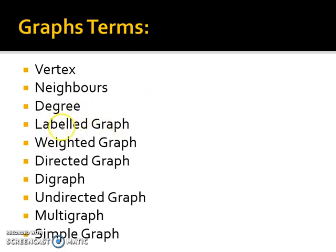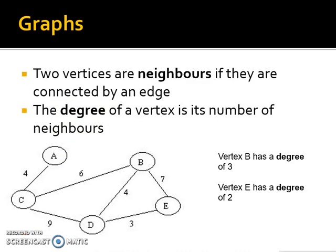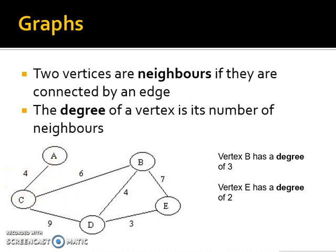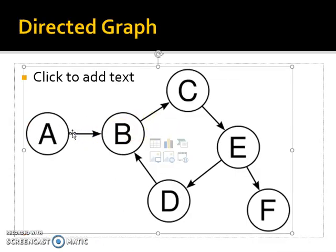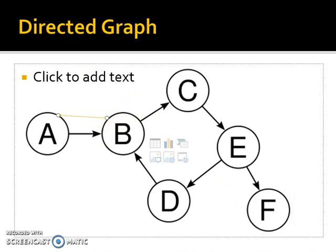The neighbors, the degree, the labeled and weighted which are the same thing. Directed and digraph, which are the same thing. Undirected graph, that's an example of it. Undirected is undirected and weighted. Multigraph, this would be if we were to take the arrow out and draw another arrow coming the other way.